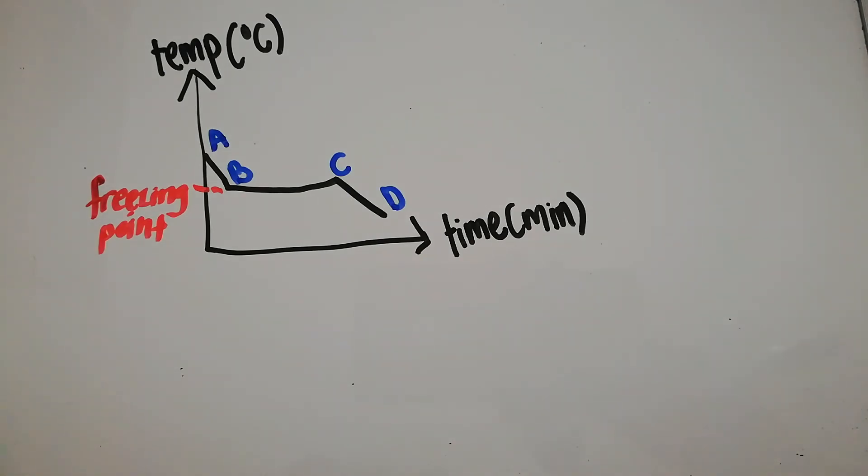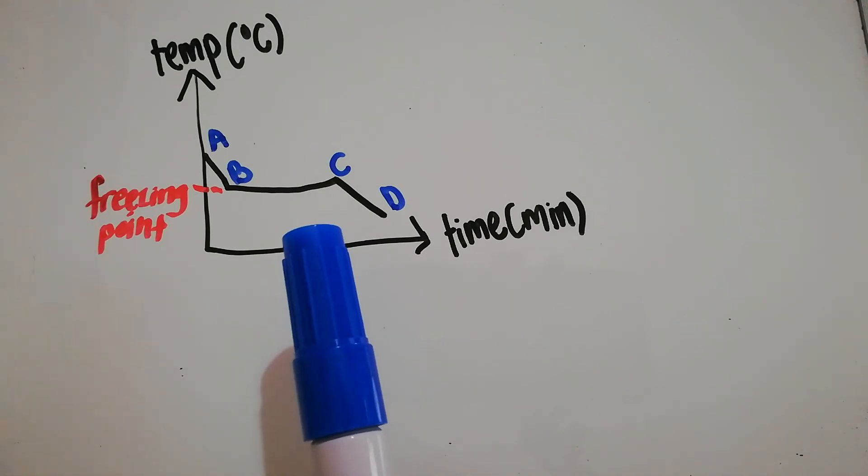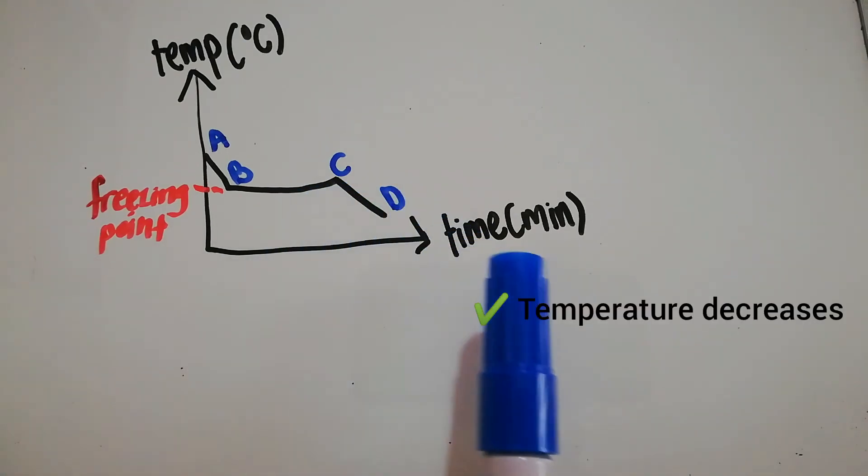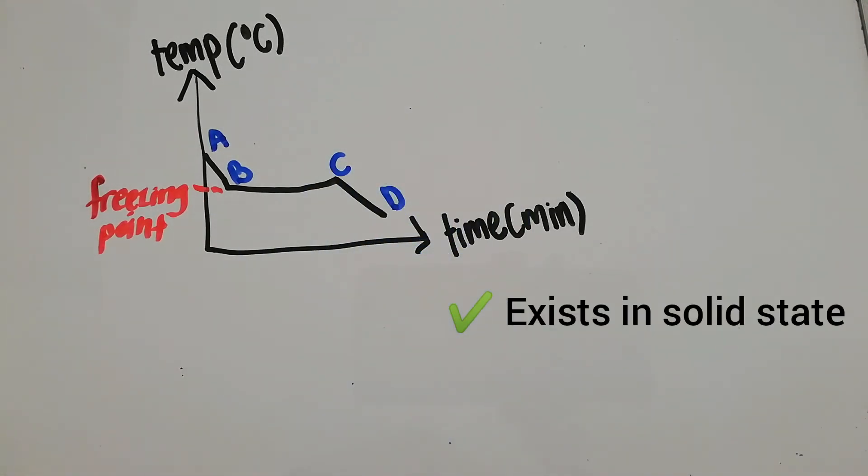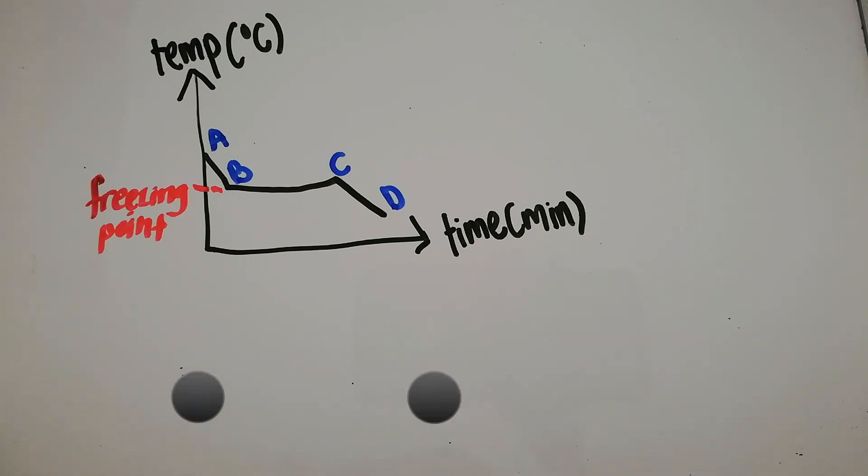From point C to D, we can see that the temperature decreases. At this point, it exists in solid state. When cooled, the particles release heat and vibrate slower because it wants to form a solid. The particles are going to be closely packed, so they will vibrate at their own place.